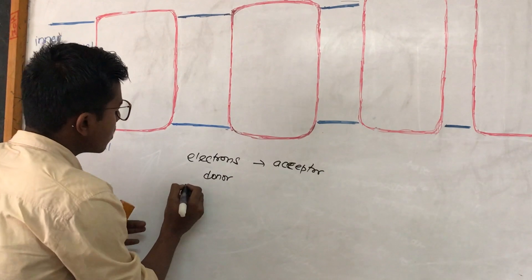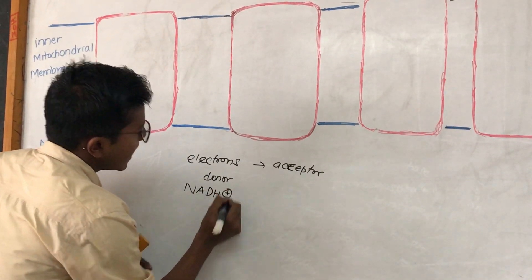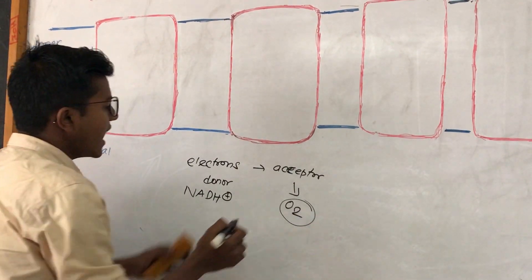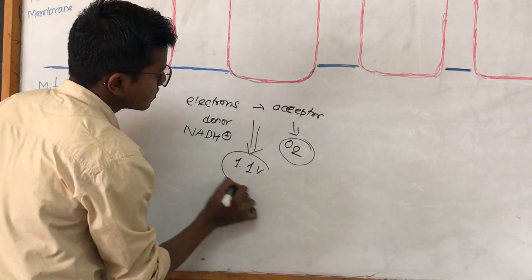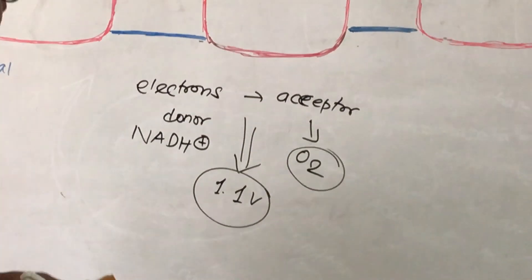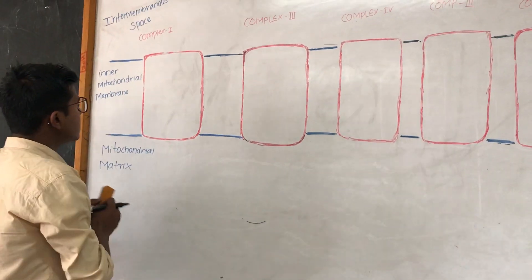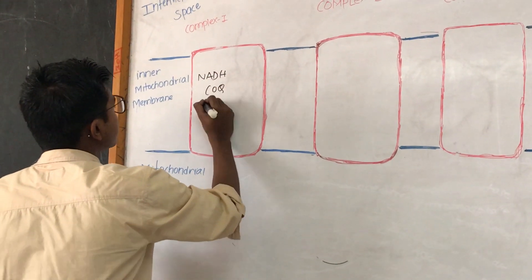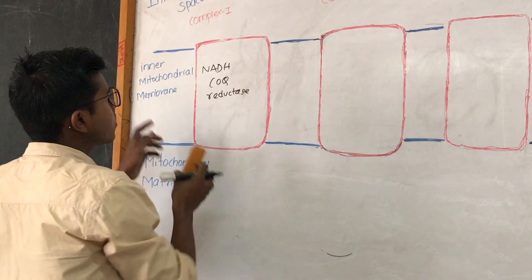The donor is the substrate via NADH, and the last acceptor is oxygen. It spans a potential difference of 1.1 volts in the inner mitochondrial membrane. The first complex is known as NADH coenzyme Q reductase.